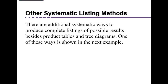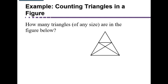Although our focus will be on product tables and tree diagrams, there are other ways of systematically listing out possibilities. One example is when you're counting triangles in a figure — in this case, it asks how many triangles of any size are in the figure below.